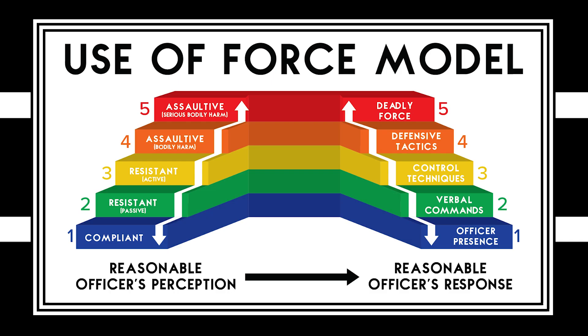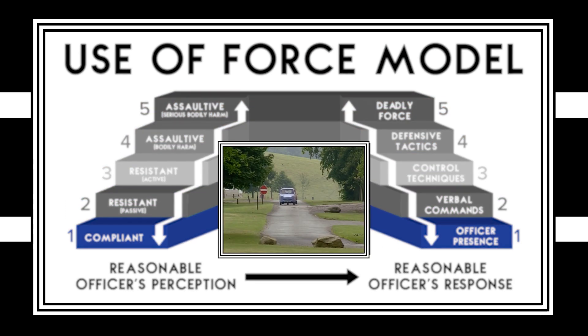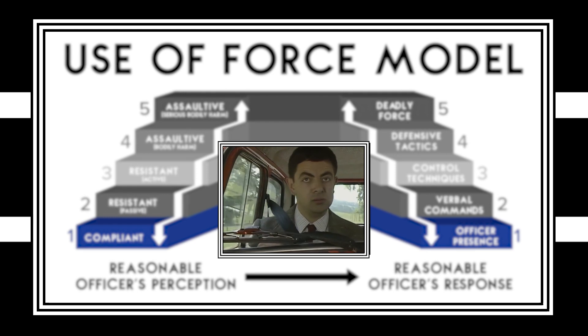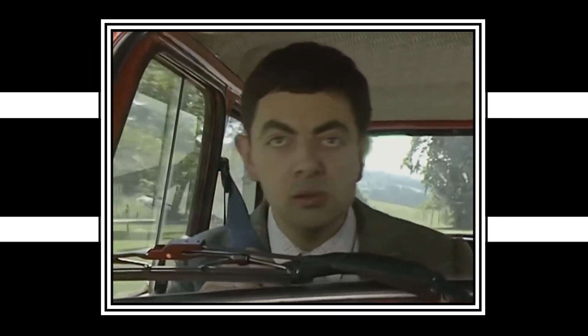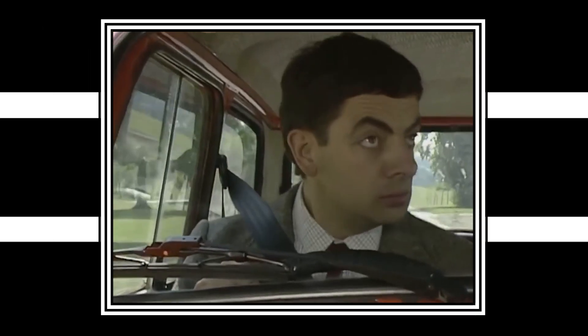Traditionally, there are five levels of the use of force model. Level one is officer presence — you all know what presence is. It's when you're driving down the street and you see a police officer on the side of the road. They might not even be looking at you, but what you do is you pucker up, check your seatbelt, look at your speed, and make sure your hands are at 10 and 2.